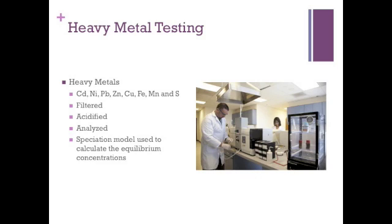Now for the process of heavy metal testing — if you are in Chem 1128, this is very similar to this week's lab. The first step is to filter the solution to remove any sediment. After this, the solution is acidified, which will separate the heavy metals into their respective ions. The ions are then analyzed through different indicator solutions or by forming a precipitate and measuring the mass of the solid. Finally, a speciation model is used to calculate and express the equilibrium concentrations of the heavy metals.